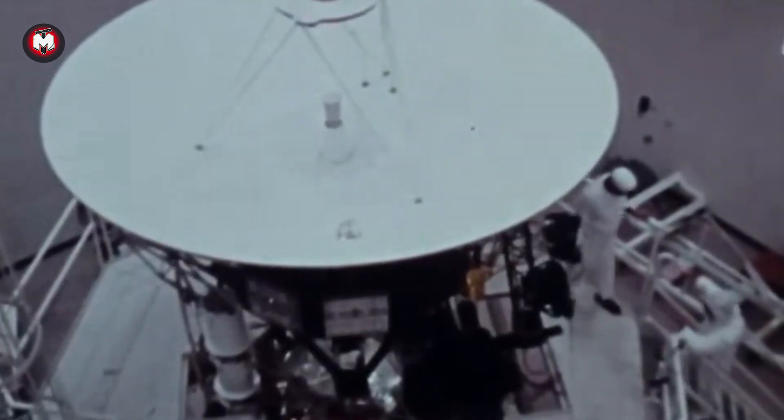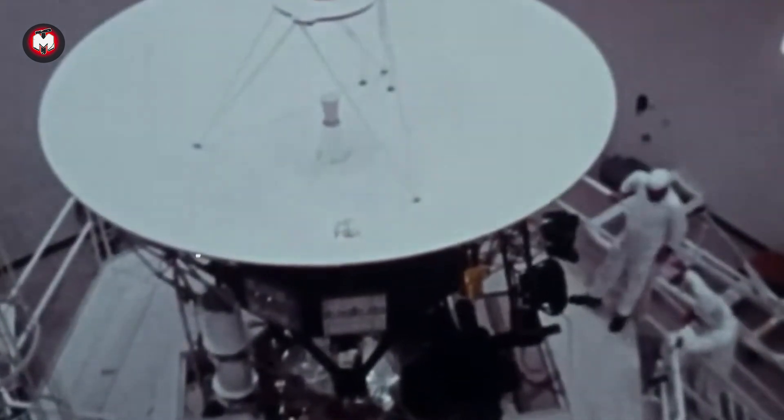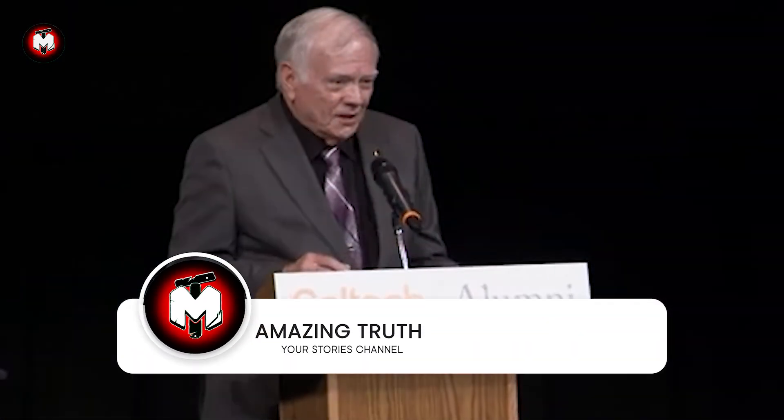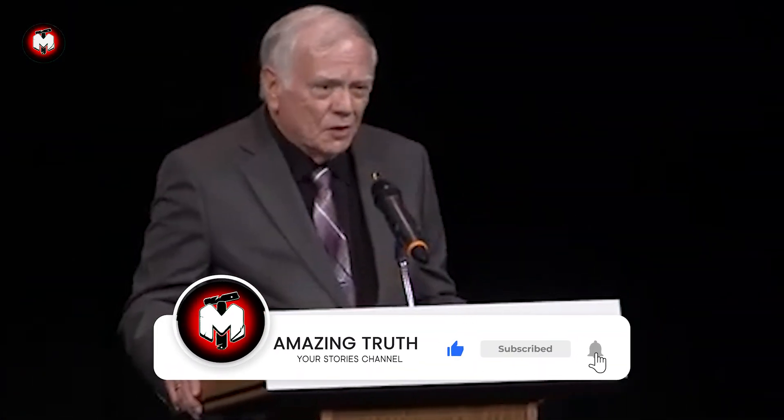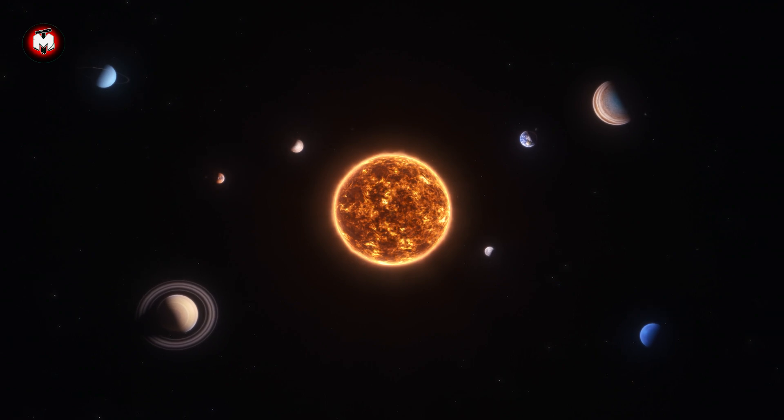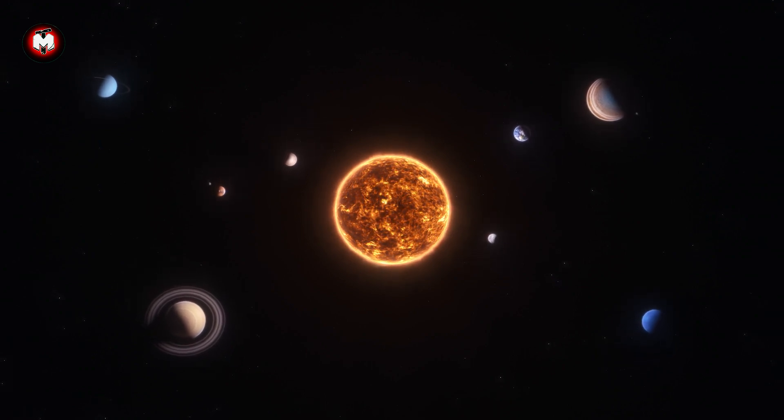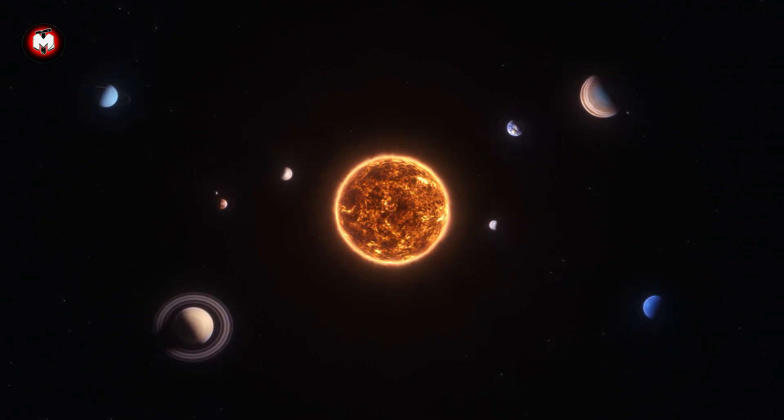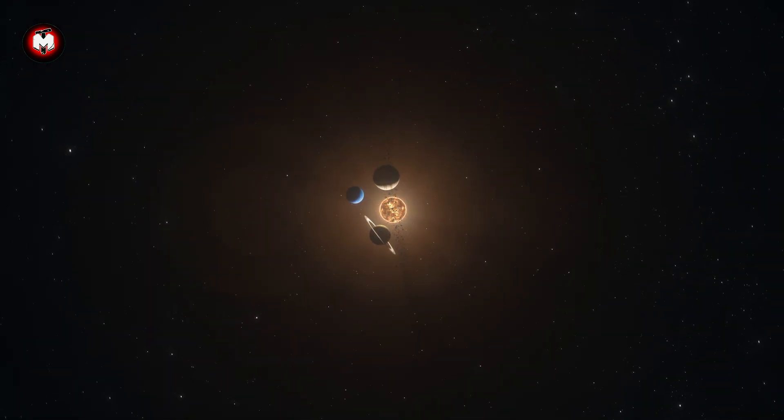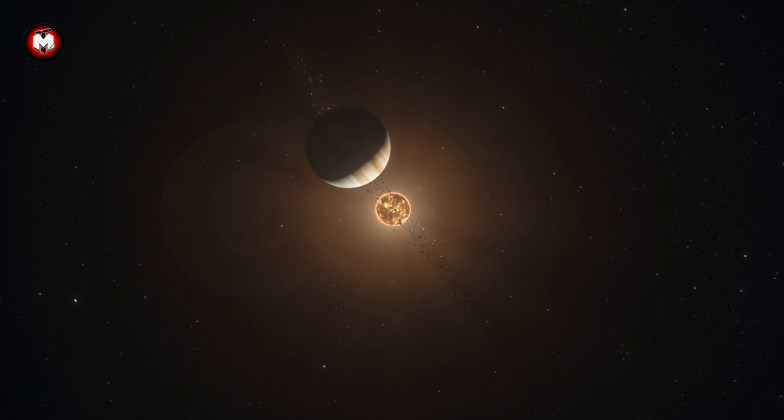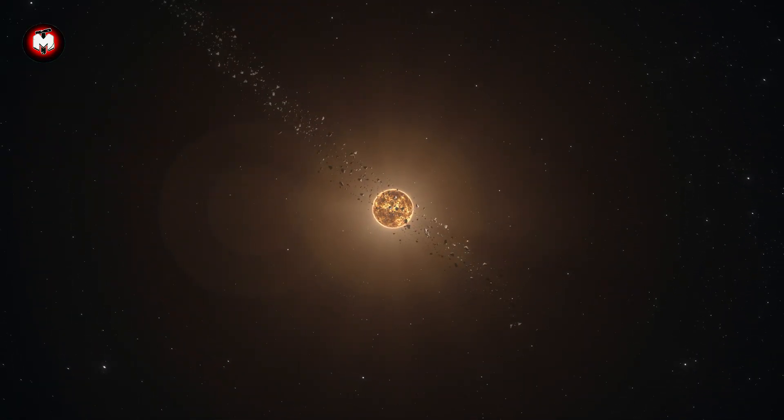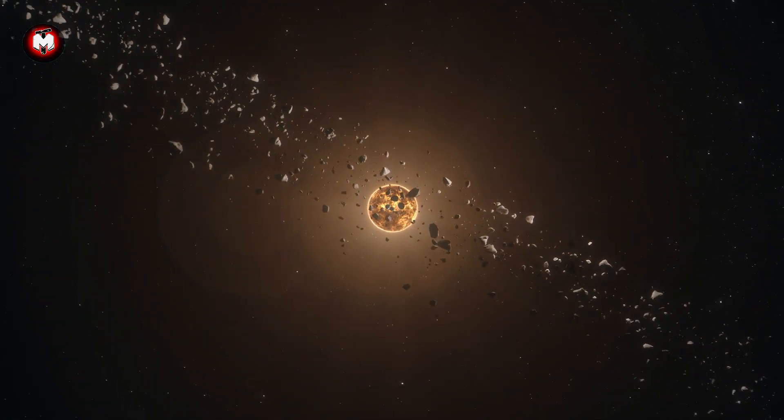The Perfect Alignment. Our story begins in the 1960s with a brilliant scientist named Gary Flandreau. While working at NASA's Jet Propulsion Laboratory, Flandreau made a remarkable discovery. He calculated that between 1977 and 1980, something extraordinary would happen in our solar system. The four outer planets—Jupiter, Saturn, Uranus, and Neptune—would align in a way that occurs only once every 176 years.